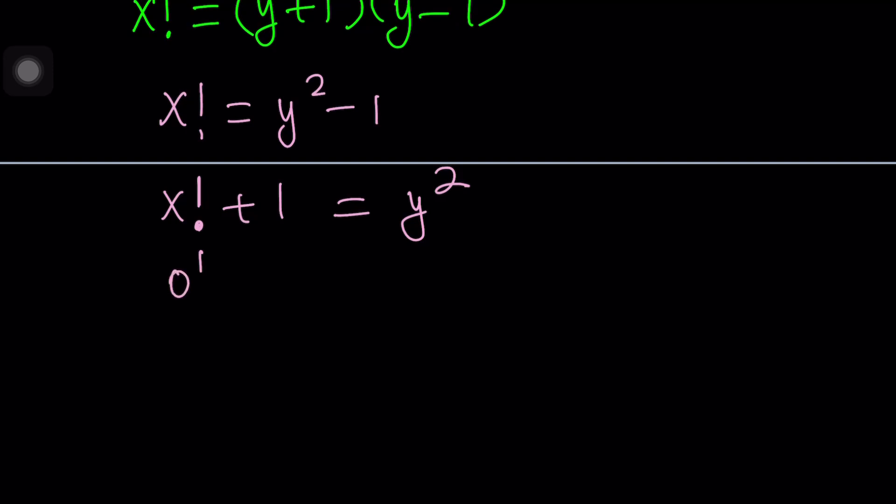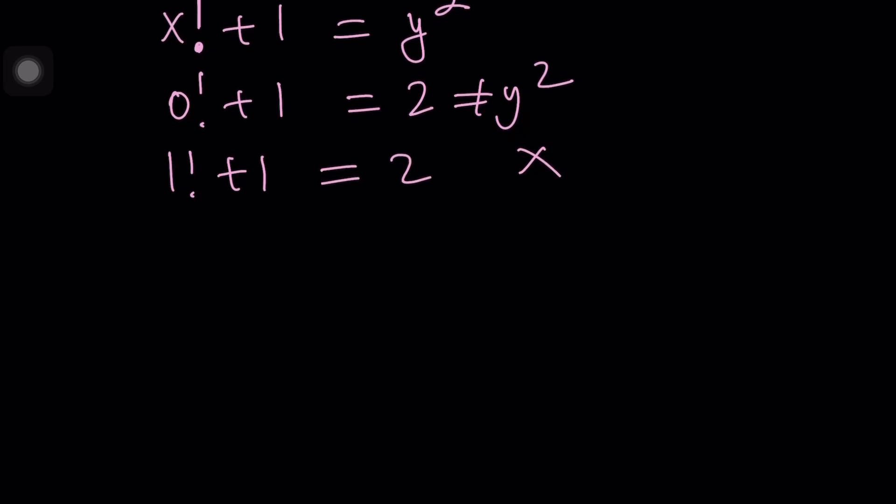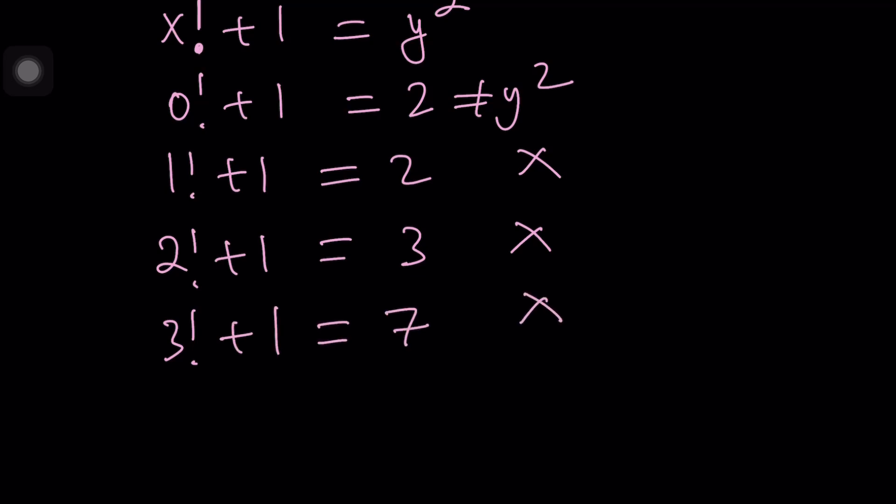What about 1? Same thing, it's not going to work. If you try 2, 2 factorial plus 1 is 3, that's not a perfect square. 3 factorial plus 1 is 7. That's not going to work either.